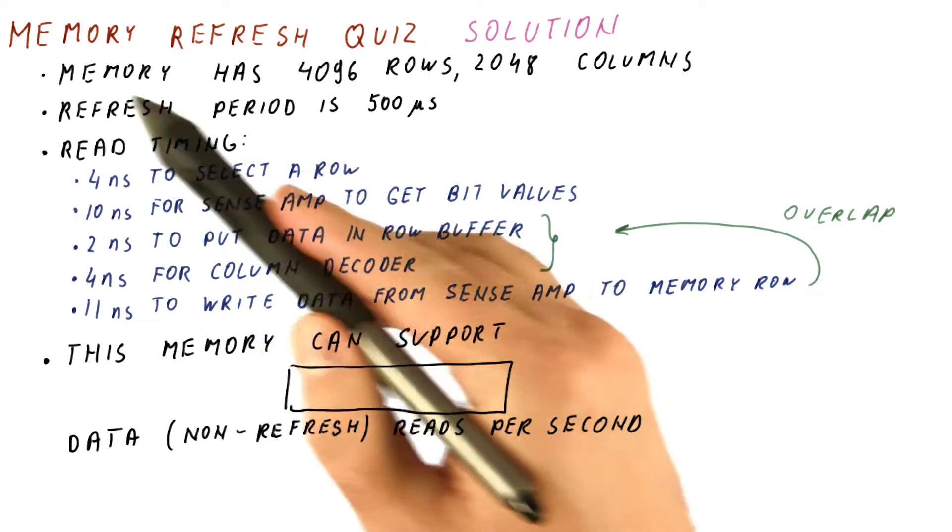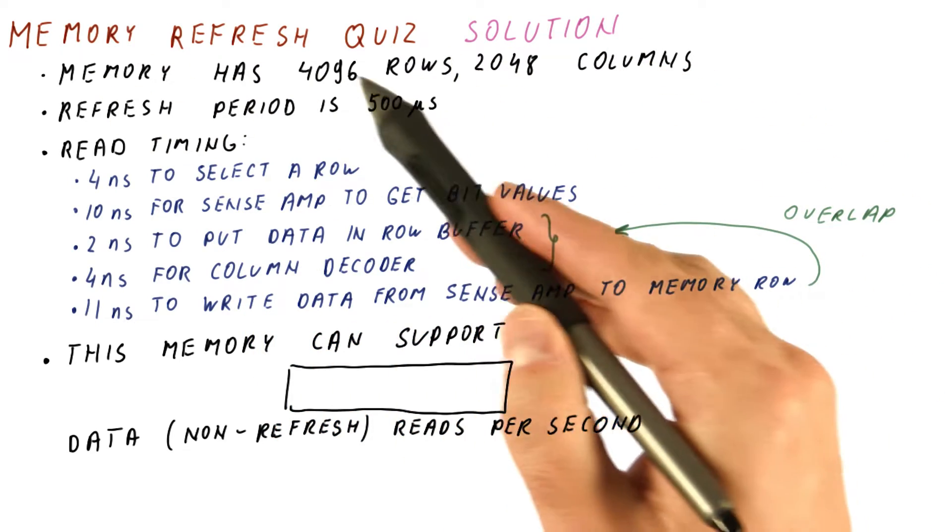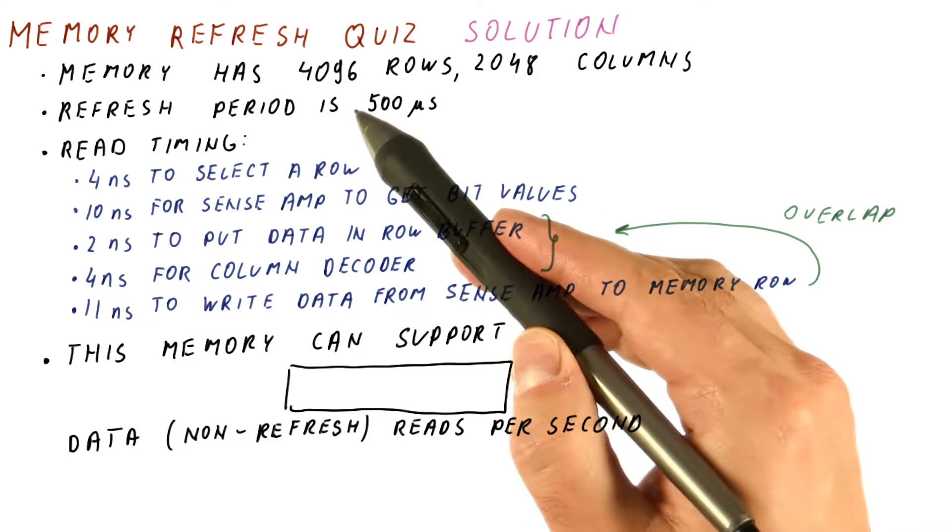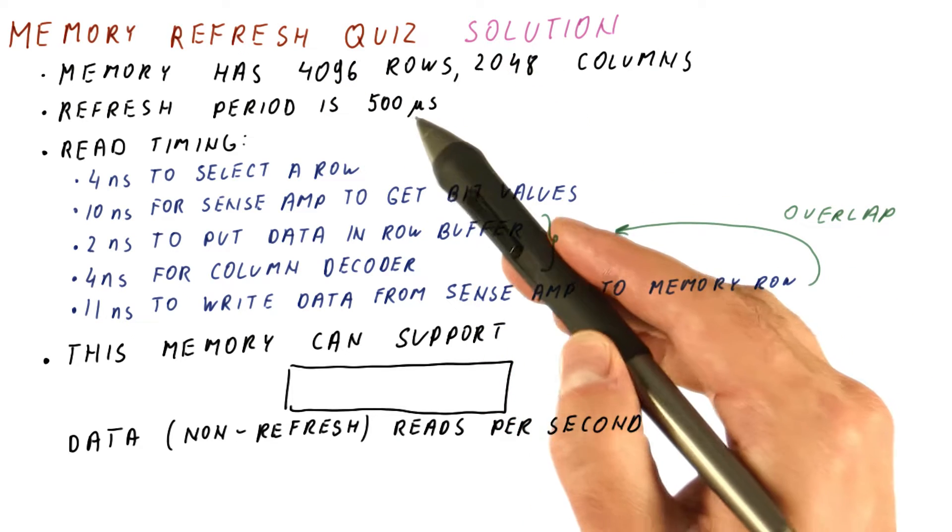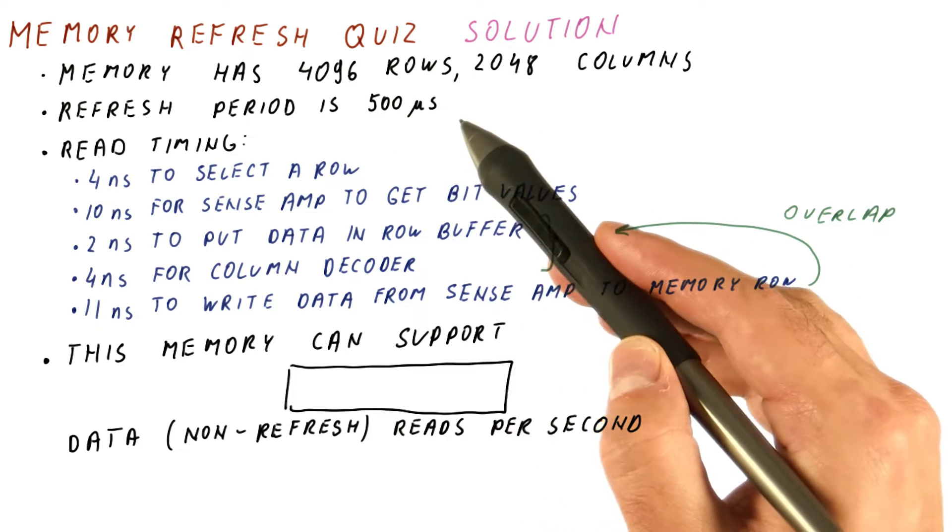Let's look at the solution to our memory refresh quiz. We have a memory with 4096 rows and this many columns. It needs to be refreshed every 500 microseconds.